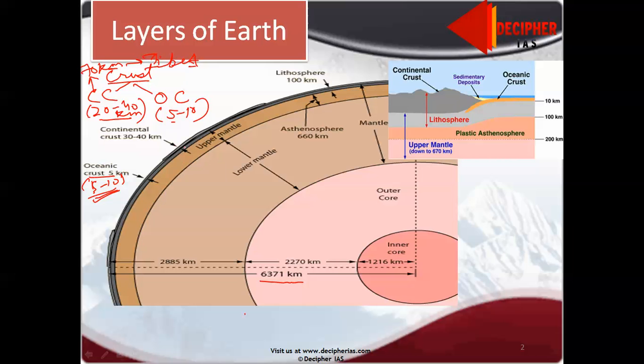After the crust, we have upper mantle, then lower mantle. Upper and lower mantle together comprise approximately 2900 kilometers. Then we reach the outer core, and after outer core, the inner core. How have we divided these layers? The difference is in the composition of minerals as well as rocks, and the phase of the rocks.